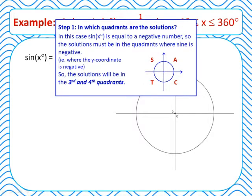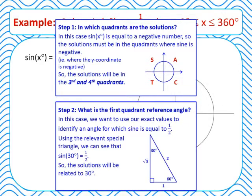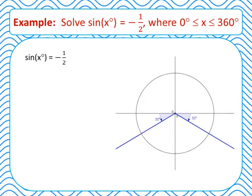We think about our first question: in which quadrants are our solutions? Our equation is sine x equals negative 1 half, so we're looking at when sine is negative — that is, when the y-coordinate is negative. So our solutions will be in the third and fourth quadrants. Our second question concerns the first quadrant reference angle: we're looking for an angle for which sine equals positive 1 half. Using our exact values, sine of 30 degrees equals 1 half. So our solutions will be related to 30 degrees, in the third and fourth quadrants — 30 degrees away from the x-axis in each.